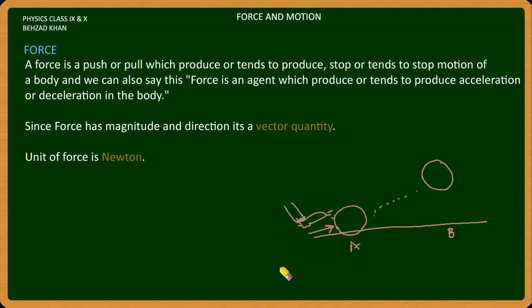Force is an agent which tends to produce acceleration or deceleration of the body. So here, acceleration is produced. Like we studied earlier, the initial velocity is zero and the velocity increases along with the direction, so acceleration is produced.